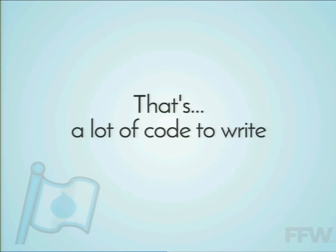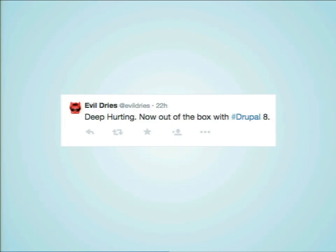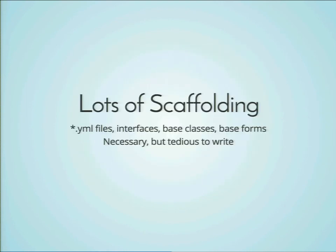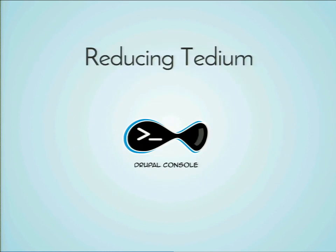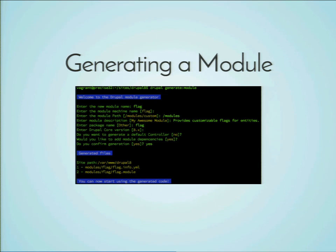At this point you might be thinking, that's just a lot of code to write — it's going to take months to write all this boilerplate. Well, I'm going to show you how to do all of that, build all of that, in five minutes. We have lots of scaffolding in Drupal 8 — that's par for the course in any object-oriented system. We have YAML files, interfaces, base classes, base forms. It's all necessary stuff, and in the end it's actually better programming practice, but it's really tedious to write. So we're going to reduce that tedium by using Drupal Console.